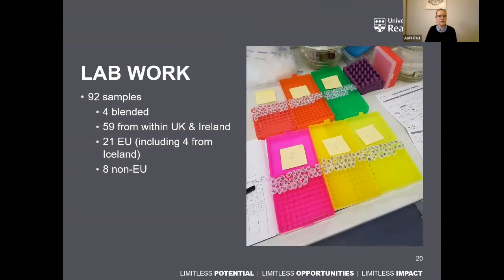For the lab work: 92 samples were included in the oxygen and hydrogen isotope analysis — four were blended, 59 from within the UK and Ireland, 21 from the EU including four from Iceland, and eight non-EU honeys. They were all measured in triplicates and then brought to the mass spectrometer for analysis.